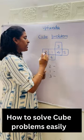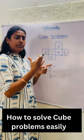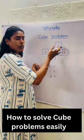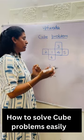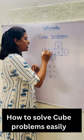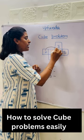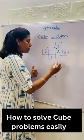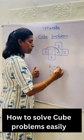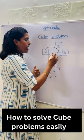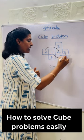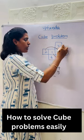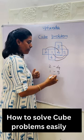For example, if you visualize it, it is very easy to find out what comes opposite to what number. Every alternate number becomes opposite to each other. For example, 2 becomes opposite to 4, 1 will be opposite to 5, and 3 will be opposite to 6.